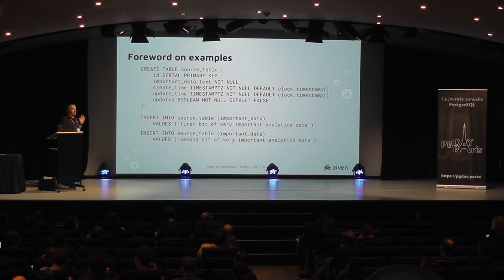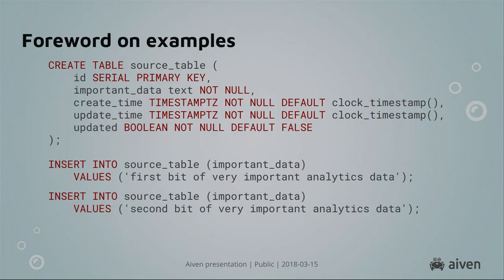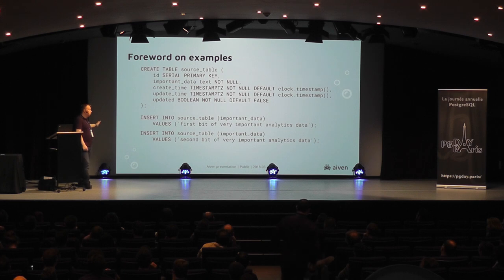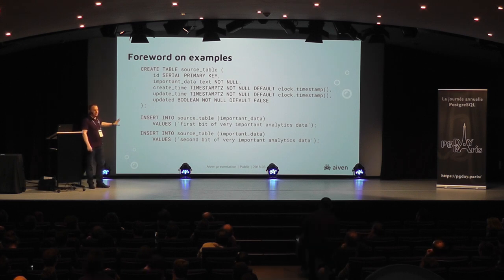A word on the examples I'll be using: I'll be using a table that basically has a serial primary key, just one column that's actually of interest. I'm going to be demoing how people have historically done this, which is why I need the other columns. The inserts and other DMLs are going to be nonsensical — don't focus on that. We're just trying to get some data and see the change happen.